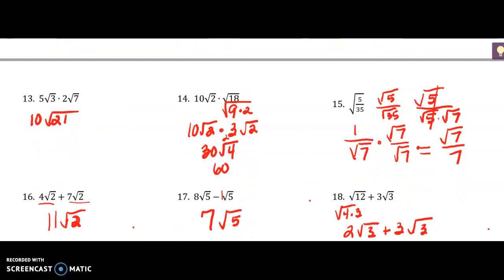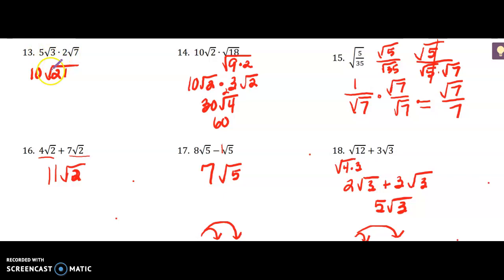On to the next page. Number 13: multiplying my coefficients, 5 times 2 is 10. Then 3 times 7 gives me the square root of 21, and there are no perfect square factors of 21, so you're finished.